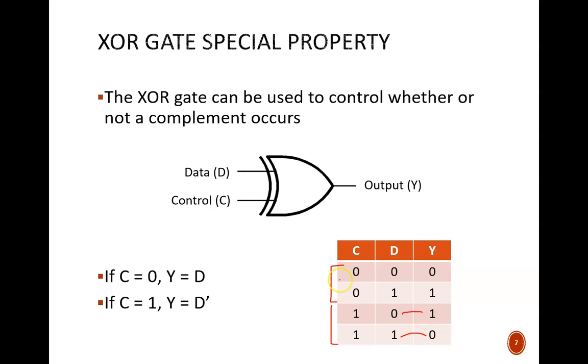In other words, when c equals zero, the gate acts like a buffer, meaning there is no change. When c equals one, the gate acts like a NOT gate.